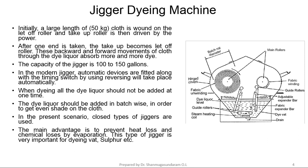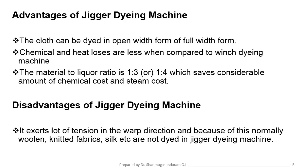In the present scenario, closed Jiggers are used. The main advantage is to prevent heat loss and chemical losses by evaporation. This type of Jigger is very important for dyeing of Vat, Sulphur Dyes, etc. The cloth can be dyed in open width form. Chemical and heat losses are less compared to the Winch Dyeing Machine. Material to Liquor Ratio is 1 to 3 or 1 to 4, which saves a considerable amount of chemical cost and steam cost.